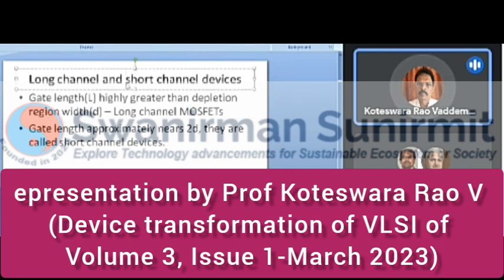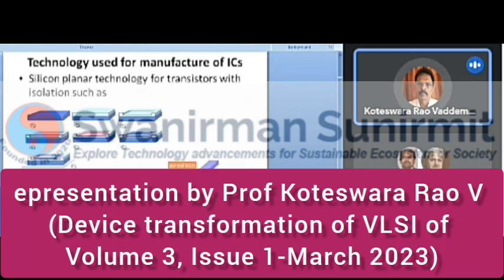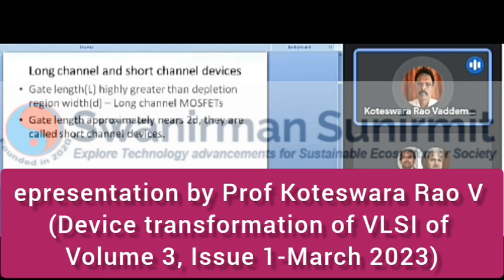Now let us discuss short channel and long channel devices. If the gate length is much greater than the depletion region width (d), they are called long channel MOSFETs. If the gate length is approximately equal to 2d — where d is the width of the depletion region — they are called short channel devices. In a transistor with P-type substrate, N-type diffusions at source and drain form P-N junctions; the width of these depletion regions is designated as small d.